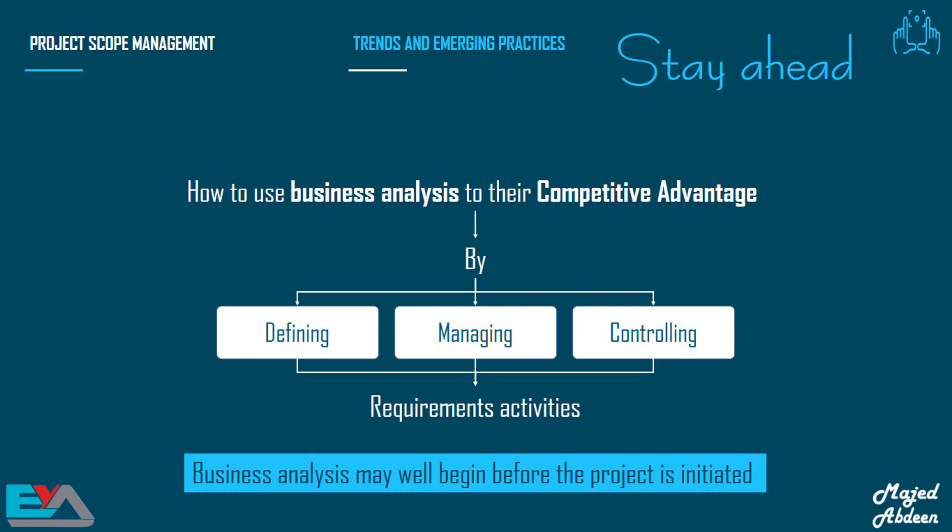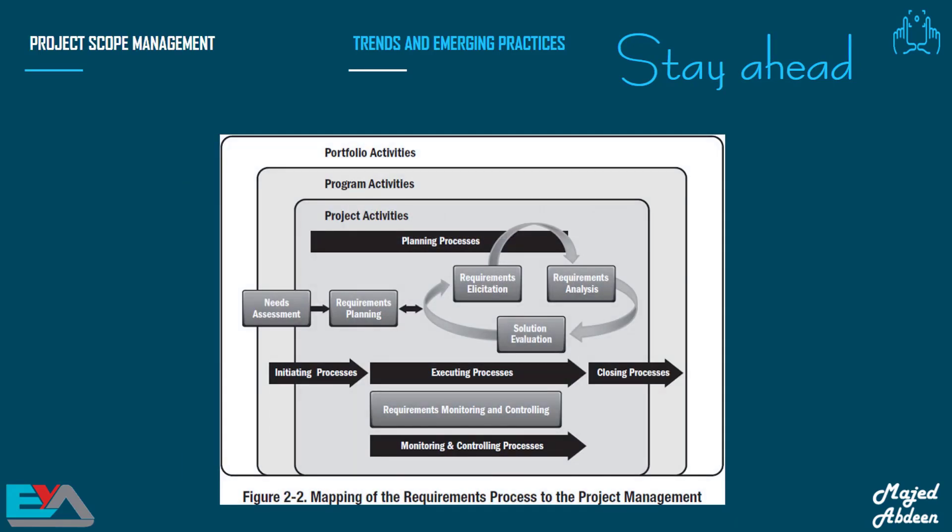As we know, requirements are a major focus for project management, and organizations are beginning to realize the advantage of using business analysis to gain competitive advantage by defining, managing, and controlling requirements activities. We have to ask how the product or service we create will stand out when compared to the competition. How can we make sure that the final outcome of our project will be appealing and produce a competitive advantage? In today's environment, we are not just trying to create a product — we are also trying to make sure that it will stand out from the crowd. Project strategy is like war strategy: the aim is to win, by winning against competitors using the product we are making during the project.